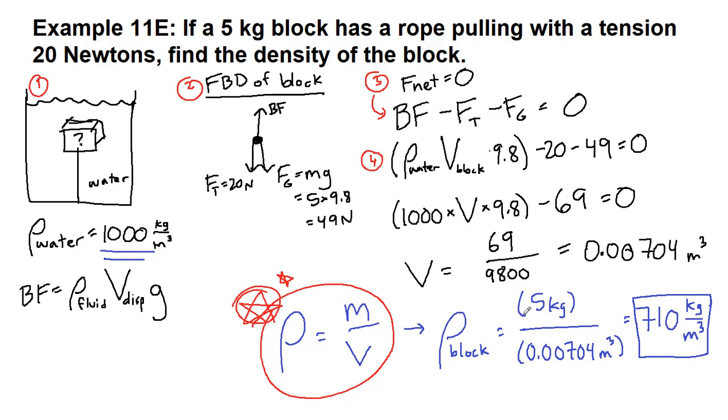and we solve for the thing we're looking for. Sometimes this starred density equals mass over volume comes in before we're solving for other things. In this case, it's at the end. But the steps we're taking really are the same for every single buoyant force example from chapter 11,